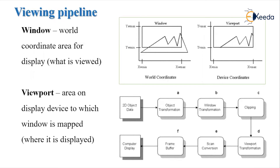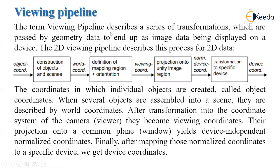The term viewing pipeline describes a series of transformations which are passed by geometry data to end up as image data being displayed on a device. First, it is an object in the real world, in a world coordinate system, which has some dimensions. When we display that object onto the display device, it turns into an image and will not have the actual dimensions — it will get different dimensions when displayed on the display device.